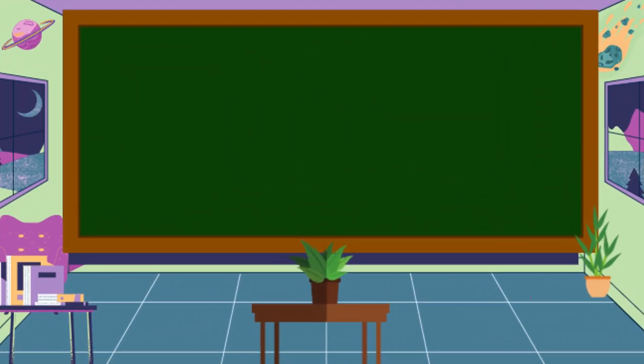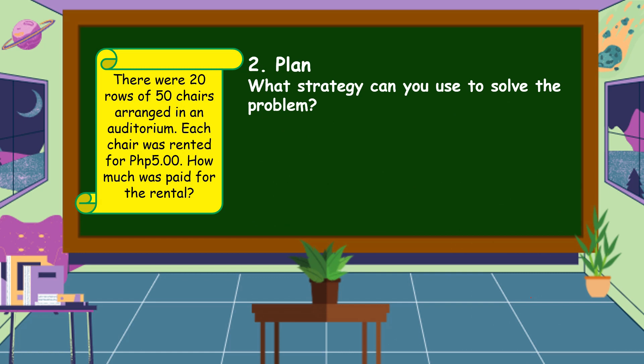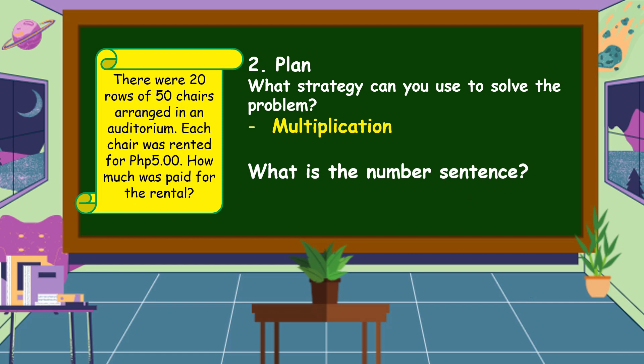The next step is we are going to make a plan. What strategy can you use to solve the problem? In this problem, we are going to use multiplication. What is the number sentence? The number sentence is: 20 times 50 (in parentheses) times 5 pesos is equal to N.